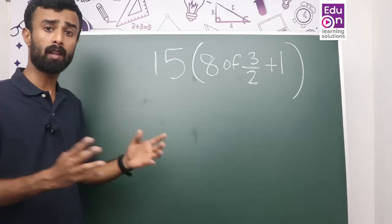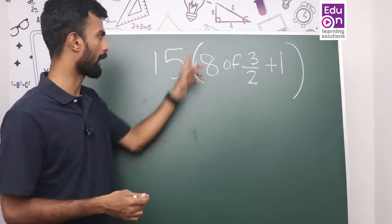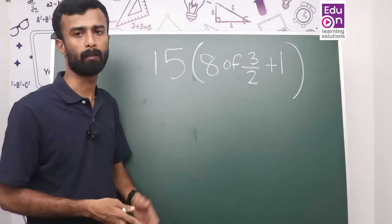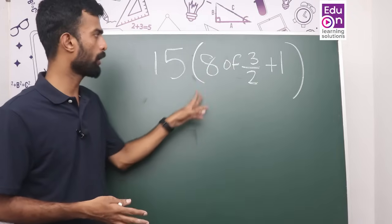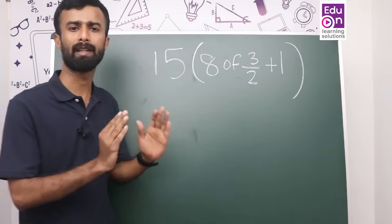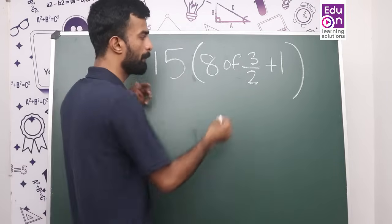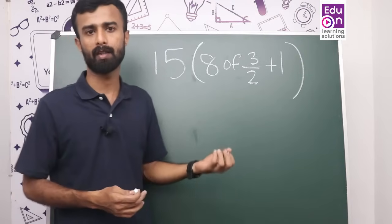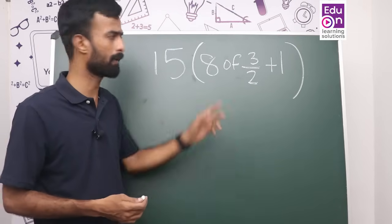If you have a question, I will show you a little bit different from the previous one. In 15, in a bracket, you will have 8 of 3 by 2 plus 1. If you don't like this, the bracket will be off. The bracket will be wrong. You will have to learn the multiplication. Because 20% of 30: we will do 20 by 100. If you have to do 20% of 30, you will have to learn the multiplication.